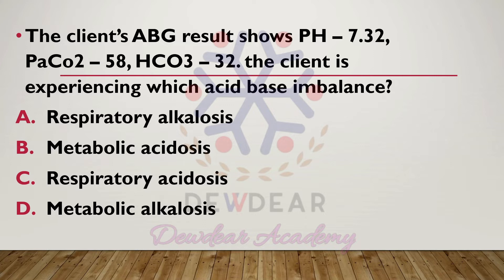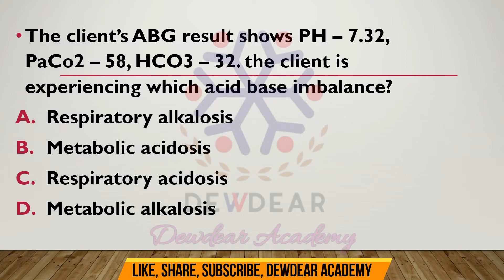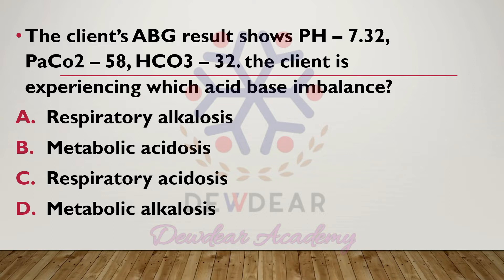The client's ABG result shows pH 7.32, PaCO2 58, HCO3 32. The client is experiencing which acid-base imbalance? Options are: respiratory alkalosis, metabolic acidosis, respiratory acidosis, metabolic alkalosis. The correct answer is respiratory acidosis.